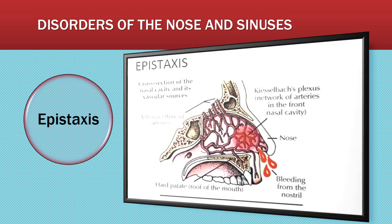Let's talk about epistaxis. Epistaxis is a common problem because of the many capillaries within the nose. There's a lot of vasculature going to the nose, including the anterior ethmoid arteries feeding the anterior part of the nose. Nosebleeds can occur as a result of trauma, hypertension, blood dyscrasias, and inflammation.